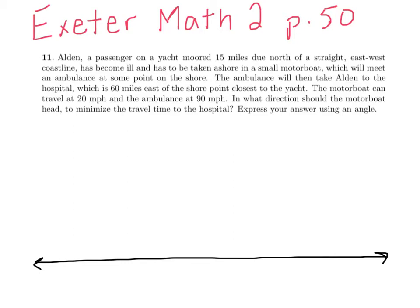He has become ill and has to be taken ashore in a small motorboat which will meet an ambulance at some point on the shore. The ambulance will then take Alden to a hospital which is 60 miles east of the shore point closest to the yacht. I know the hospital is east, so I'm going to put a point out here and label that H.